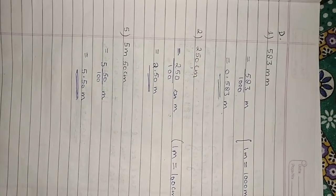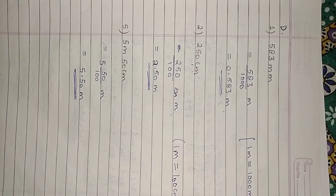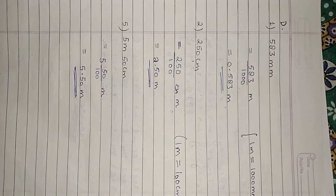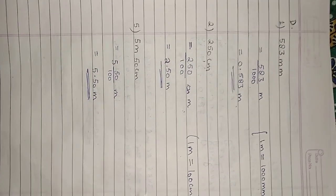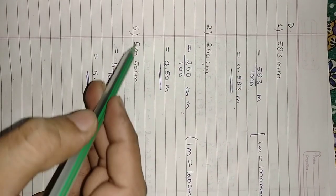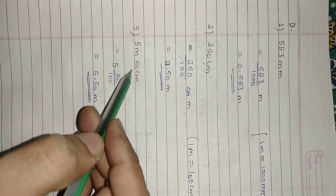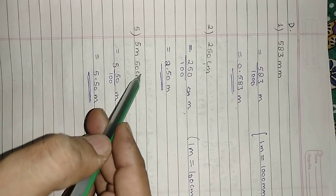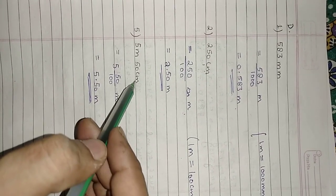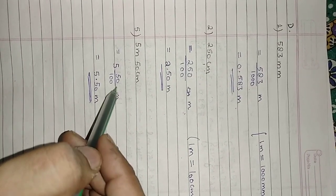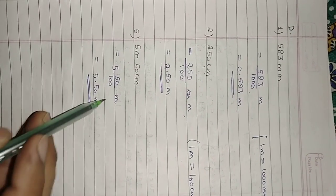Fifth: 5 meters 50 centimeters. This unit is already in meters. We only convert 50 centimeters into meters, writing it as a mixed fraction: 5 and 50/100. Two zeros means we count 2 digits and place the decimal, giving 5.50 meters.